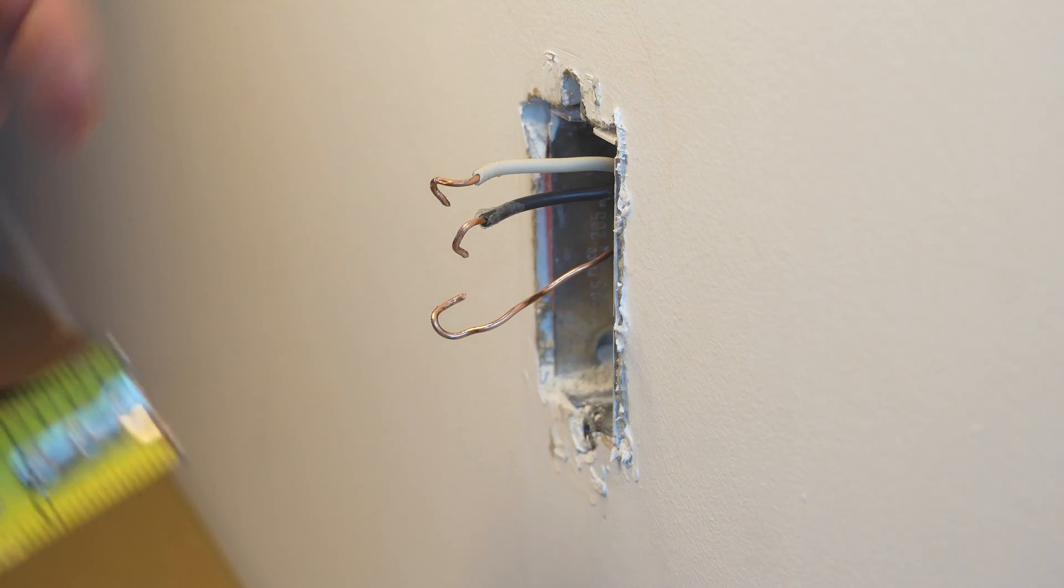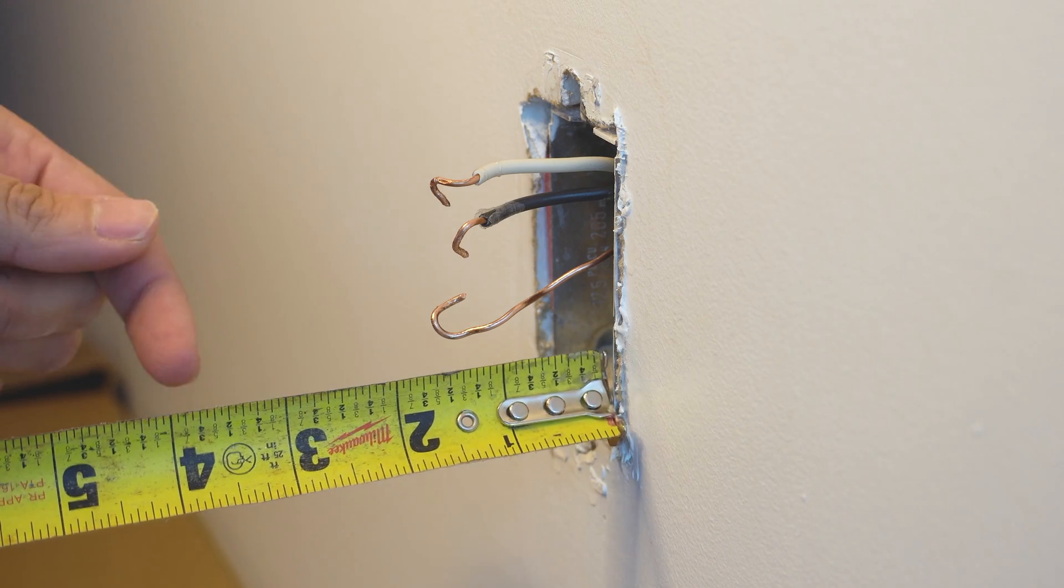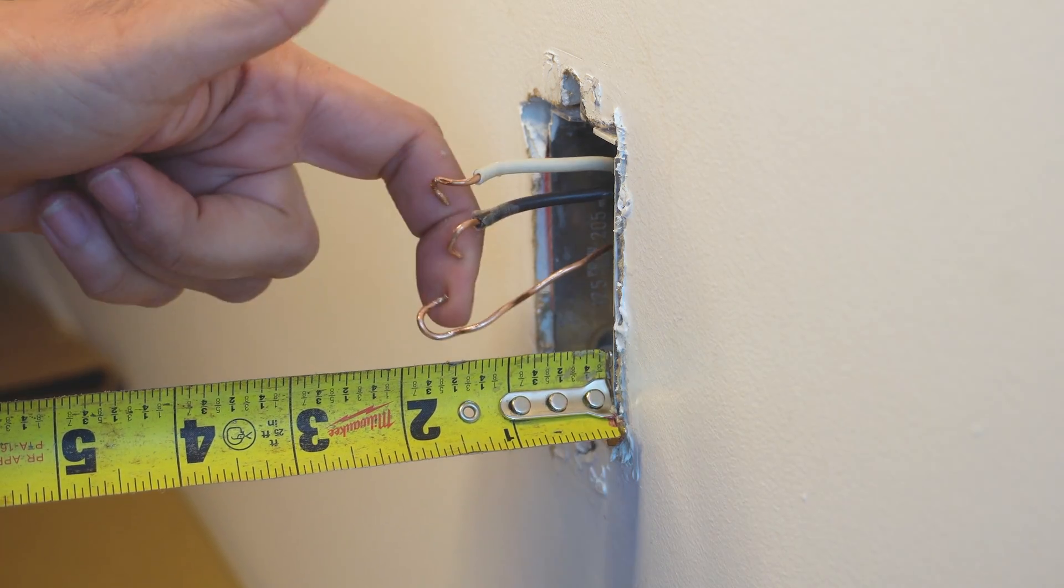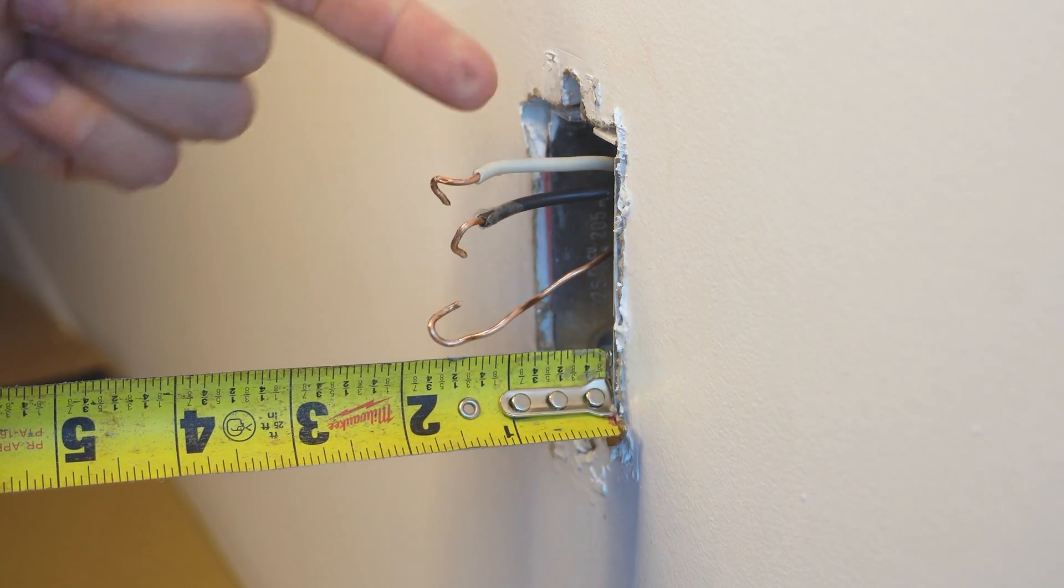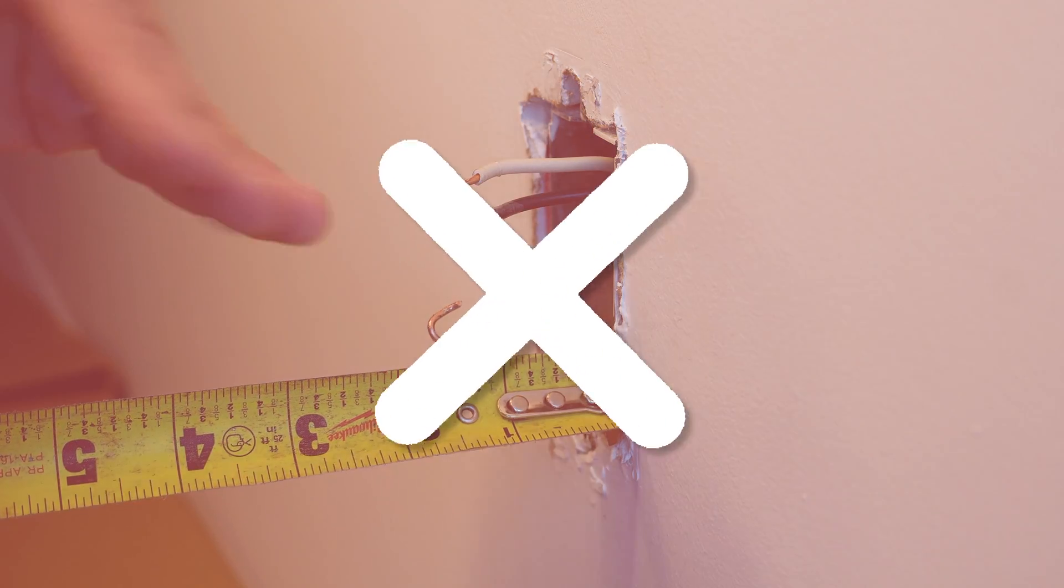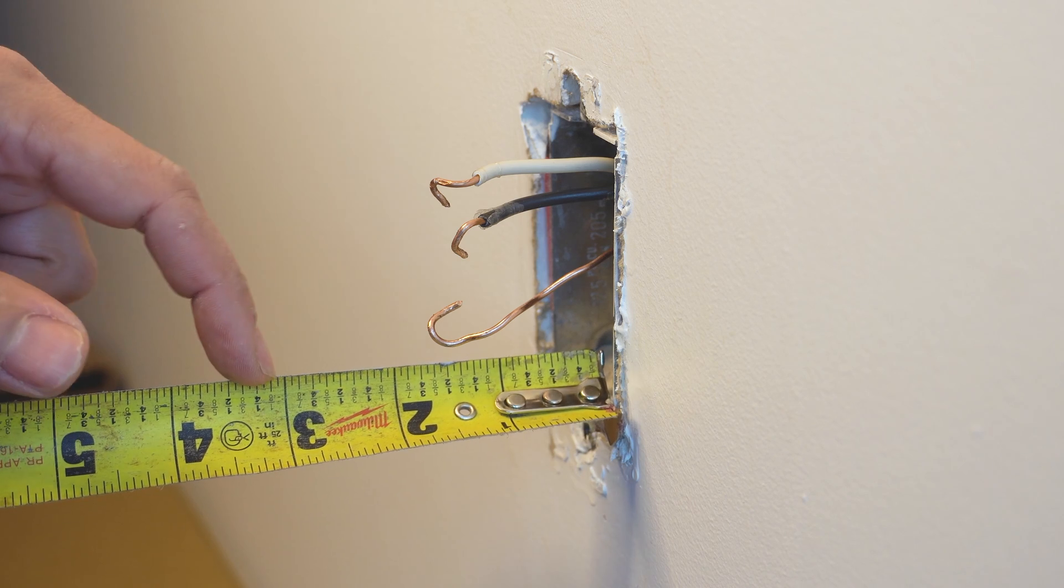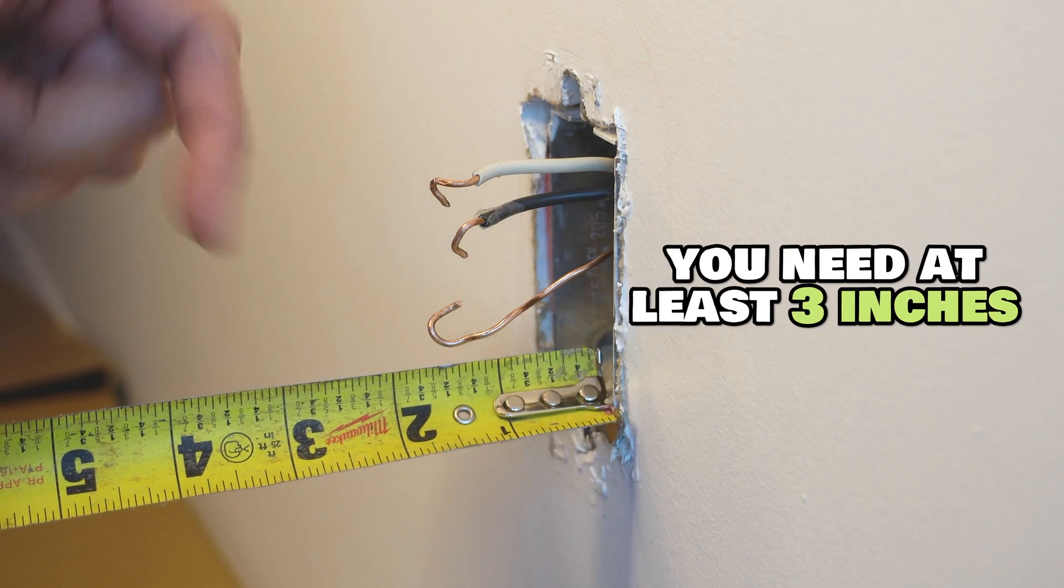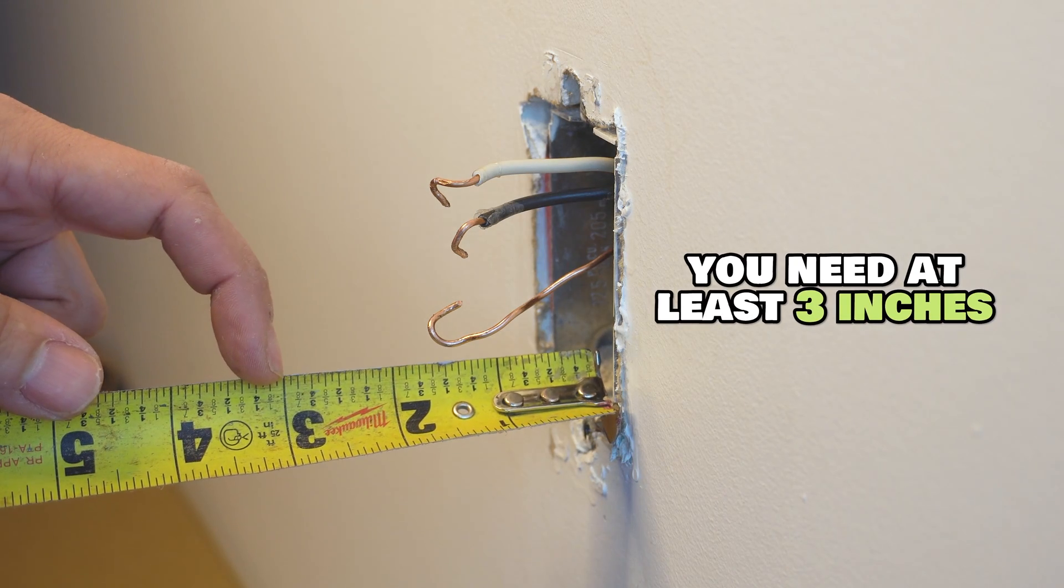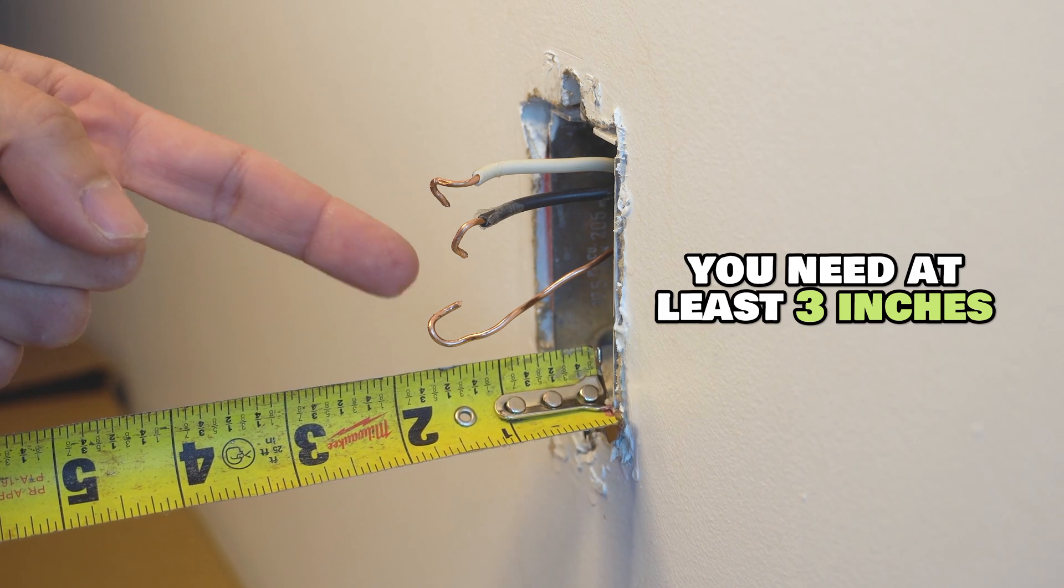Let's measure our wires now and see what we're dealing with. So from the drywall, the projection, it's sticking out only about two inches. This is bad. It's way too short. By code, these wires need to extend from the box and the drywall here, at least three inches away from the drywall. We need to fix this right now.